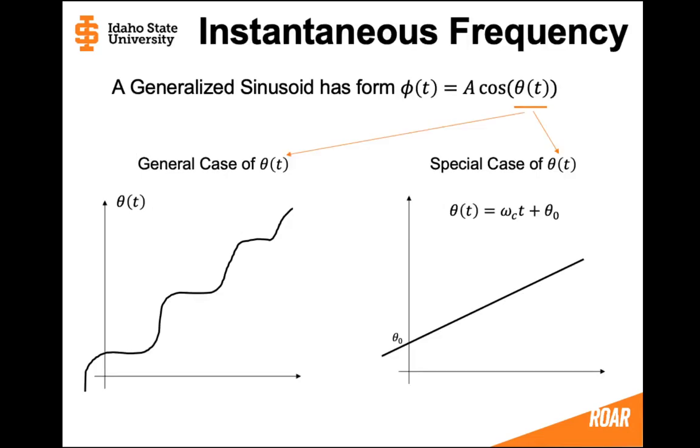To understand instantaneous frequency, let's consider some general sinusoid wave with the form φ(t) equals A cosine θ(t). Now θ(t) could be anything. Let's consider two cases of θ(t). On the left side, consider theta that's just some wavy line that changes, could be anything.